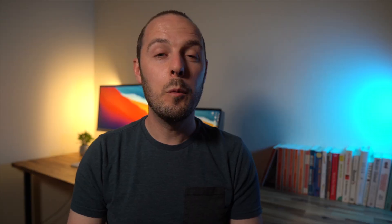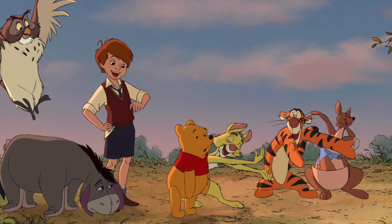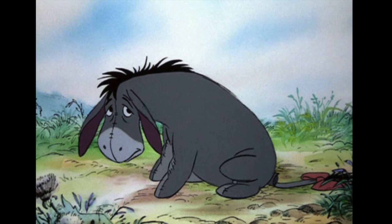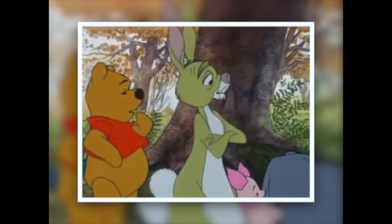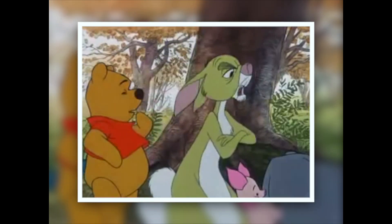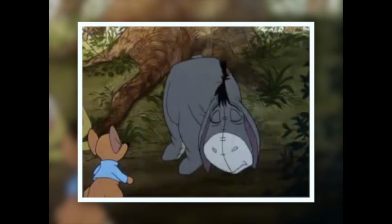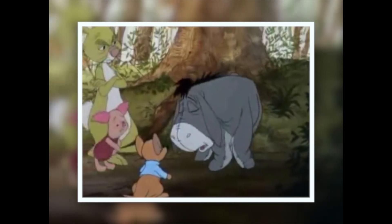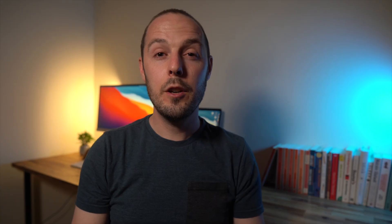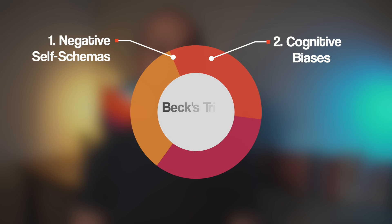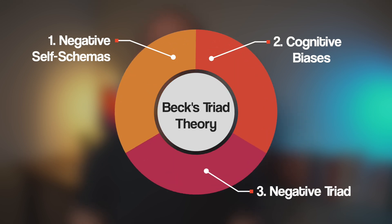Here's an example from a Winnie the Pooh episode relating to Eeyore's birthday. Here we can see Eeyore's distorted thinking at work: 'Tigger's so thoughtless with his bouncing. Why should Tigger think of me? Nobody else does.' The third and final part of Beck's theory is the negative triad.